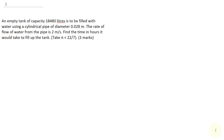In this video, we are going to be solving the KCSE 2021 past question. Question 1 says: an empty tank of capacity 18,480 liters is to be filled with water using a cylindrical pipe of diameter 0.028 meters. The rate of flow of water from the pipe is 2 meters per second. Find the time in hours it will take to fill up the tank.